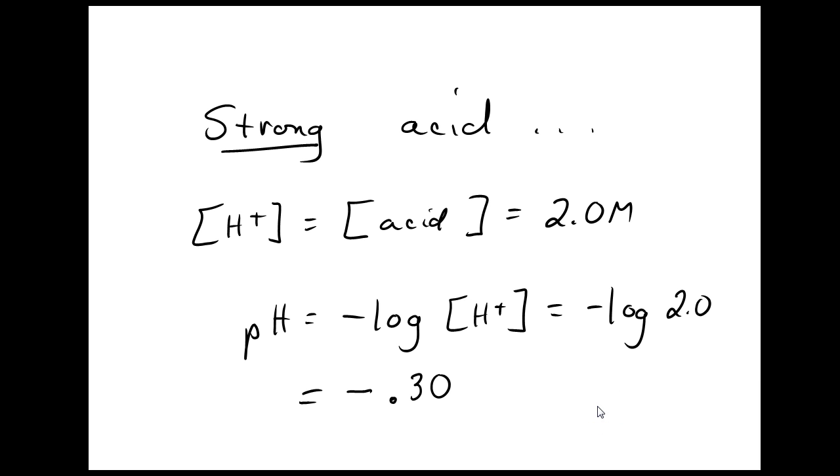Here's the solution. Nitric acid, HNO3, is a strong acid, so the H+ concentration is going to be exactly the same as the acid concentration, 2.0 molar. The pH is just the negative log of the H+, so I put in my 2.0 molar there, and my answer is going to be negative 0.30. There's two sig figs here. I should have two decimal places there.